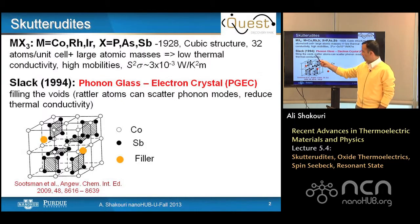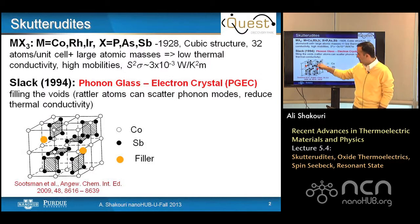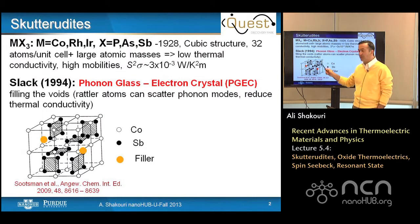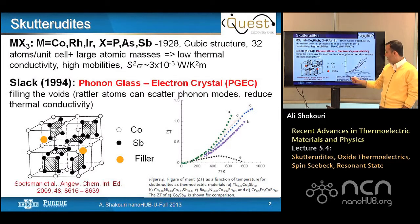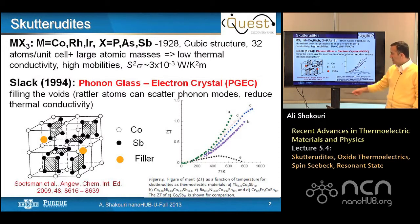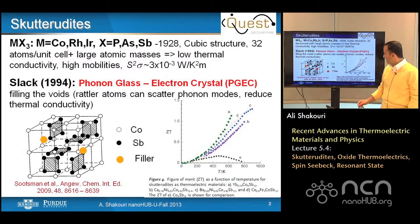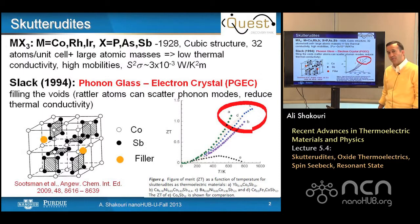This was one of the original material systems where Glenn Slack's idea of phonon glass and electron crystal for good thermoelectrics could be realized. The voids can host rattler atoms that scatter phonon modes and reduce thermal conductivity, while the cobalt antimonide backbone forms a good lattice for electron mobility. State-of-the-art ZT versus temperature for these skutterudites can reach about 1.3.